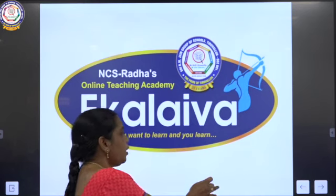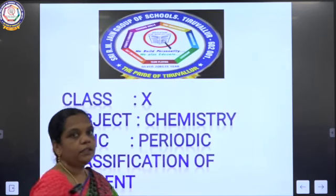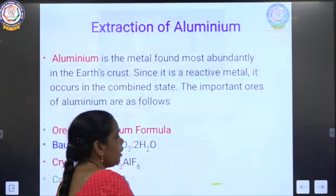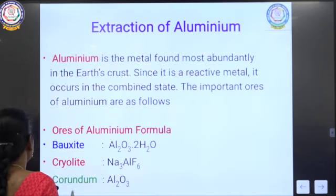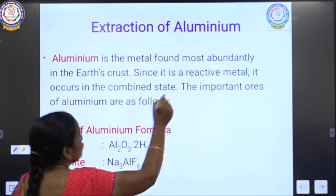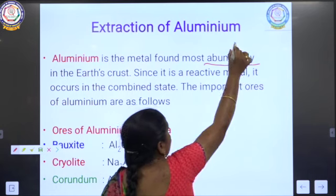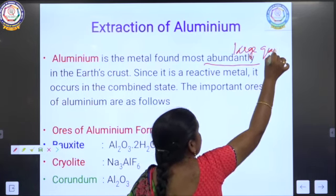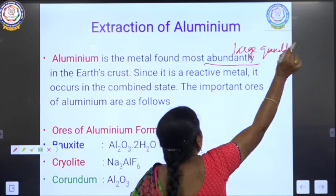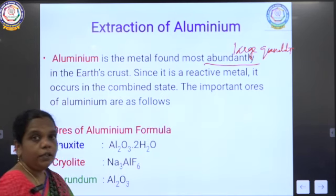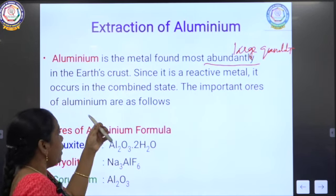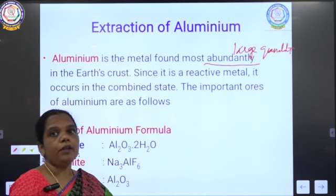Aluminium is the most abundant metal in the earth's crust. Abundant means it exists in large quantity. Aluminium is also more reactive in nature.